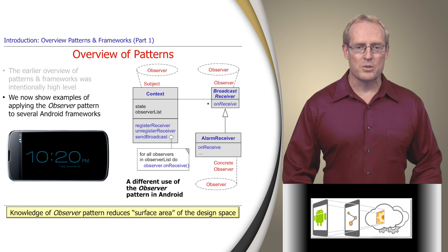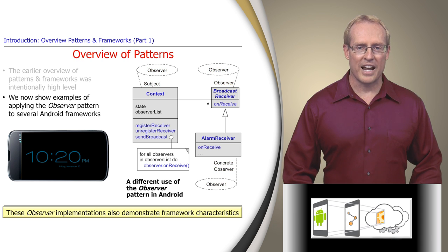Knowing that Android applies the observer pattern helps application developers better understand how these two different frameworks behave and how to use them effectively, since it reduces the surface area of the design space. Both these applications of the observer pattern in Android also demonstrate key framework characteristics, such as inversion of control, domain-specific structure and functionality, and semi-complete portions of applications, as discussed in the previous video.